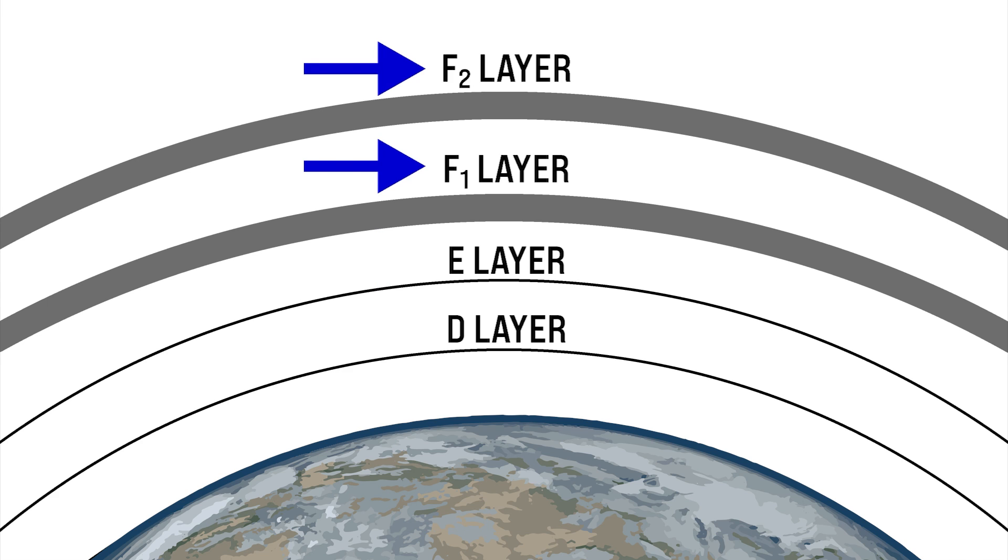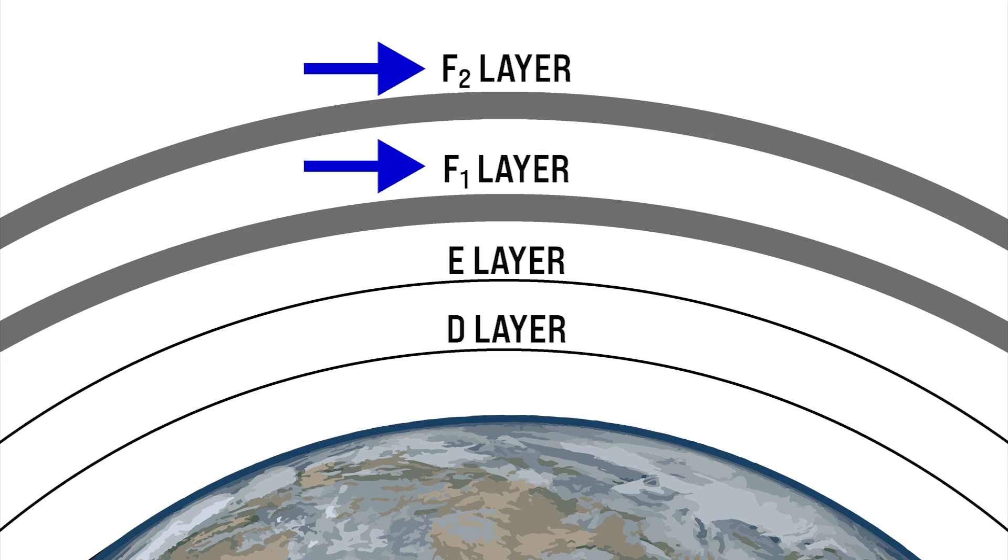The F region is the outermost ionized layer and can range from 100 to 300 miles above the earth. It's the most usable region to us in that it hangs around in both day and night and during the night time it exists as a single layer however splits into two layers during the day.